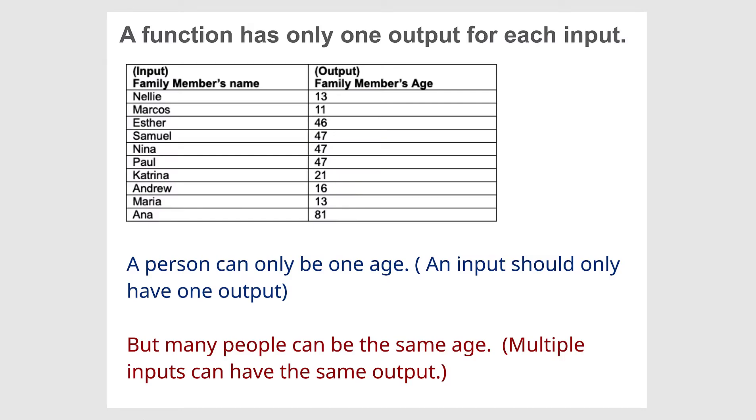A function has only one output for each input. If you look at this diagram here, the input is a family member's name. So in other words, it's a person, right? And over here, the output is their age.